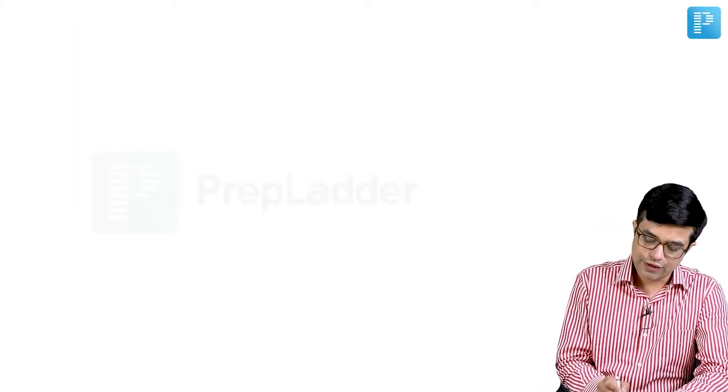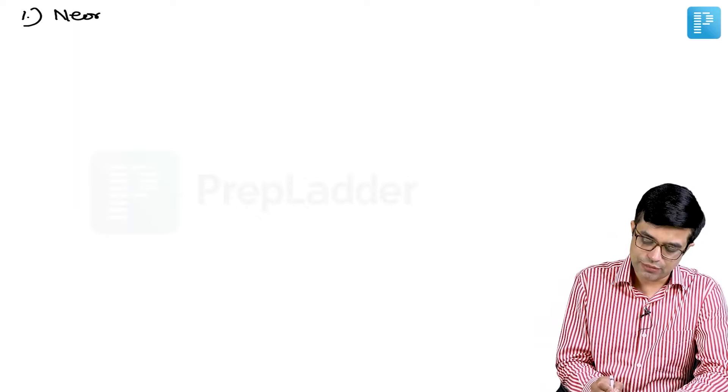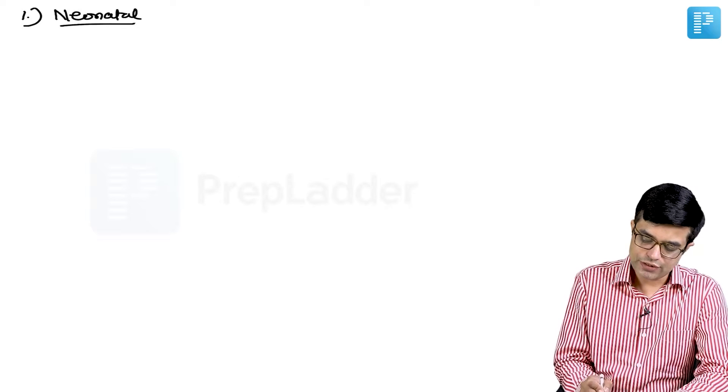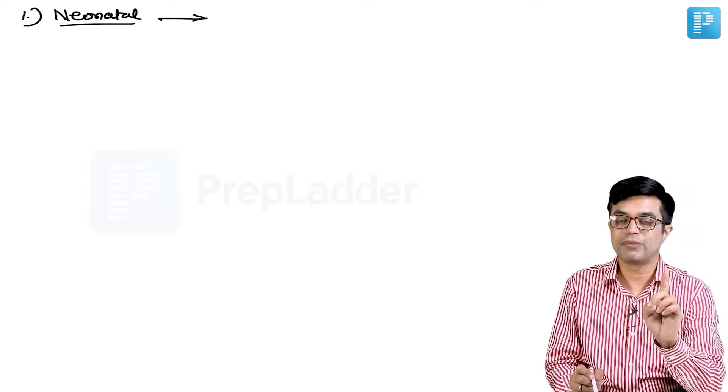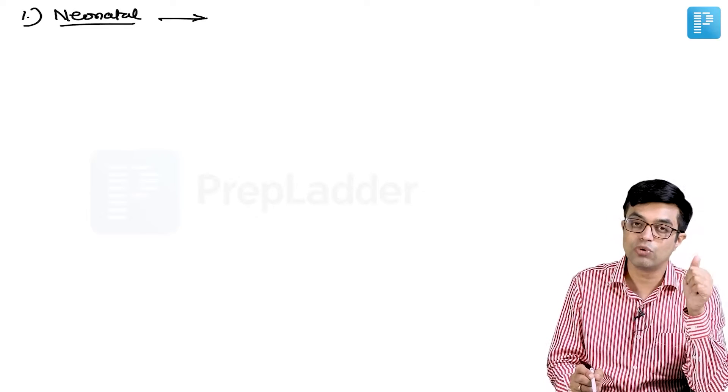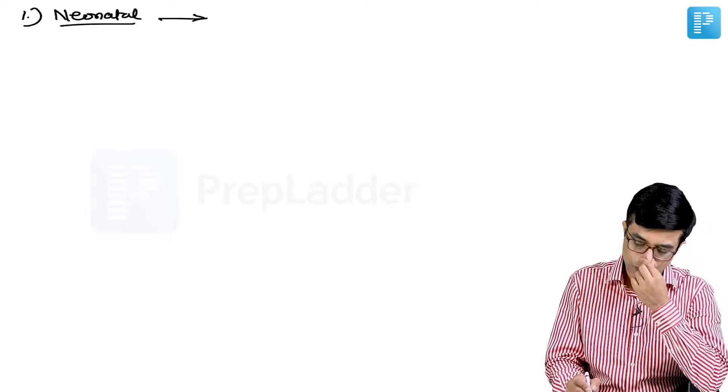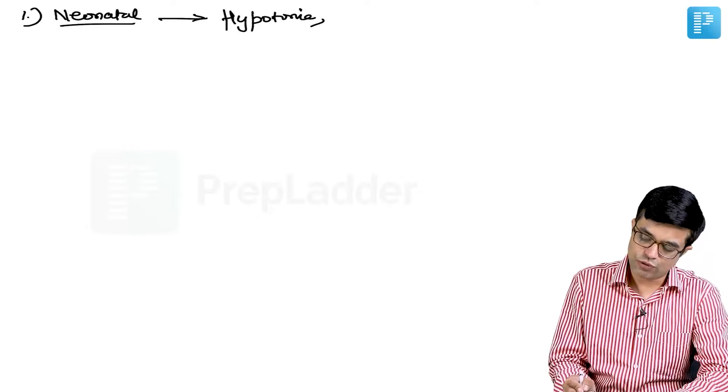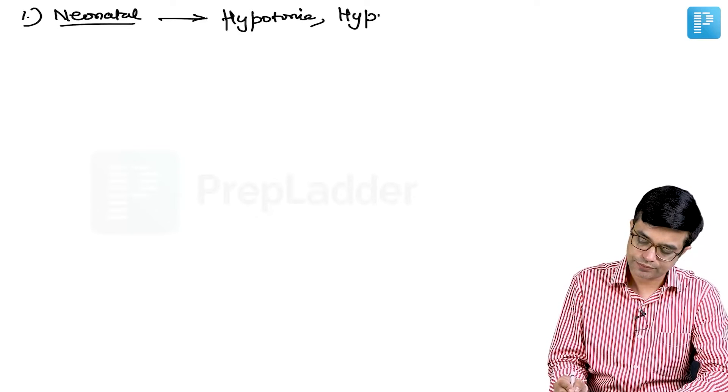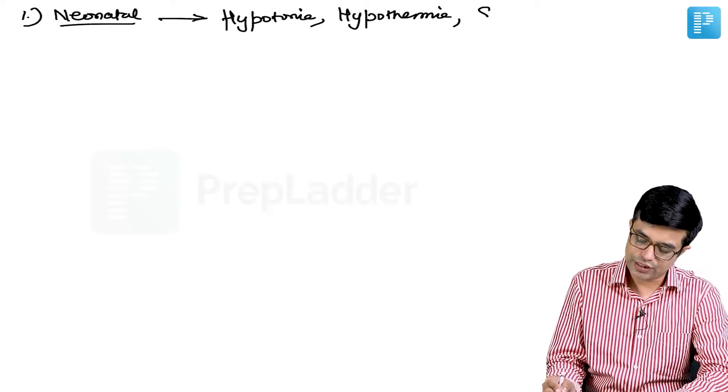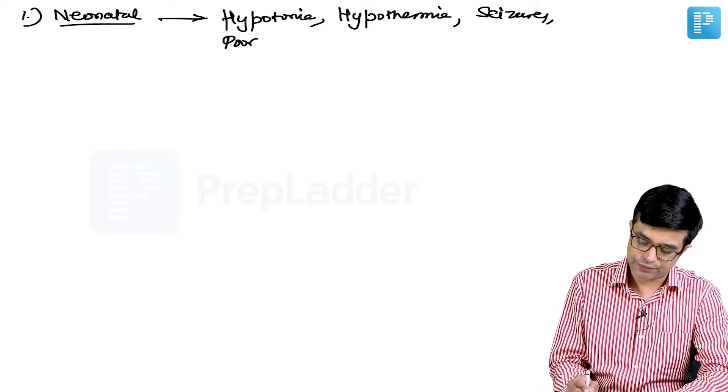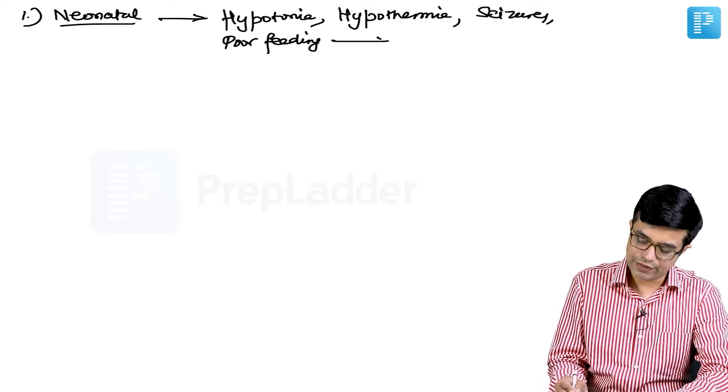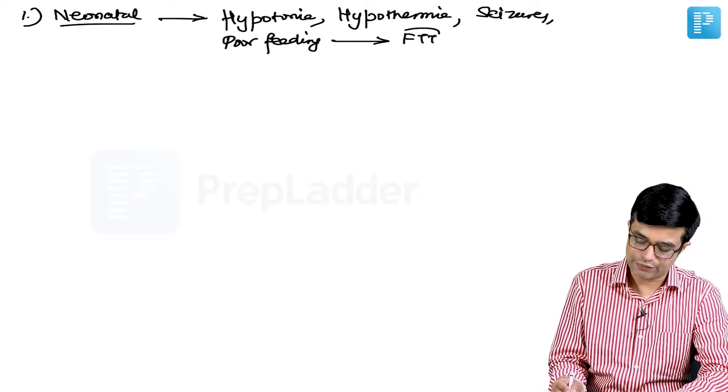Let us enumerate what abnormalities you find. First of all, if you look at the neonatal period, neonates will have CNS abnormalities. Remember that CNS abnormalities in neonatal period will appear before hair abnormalities come to attention. You will have hypotonia in the patient, newborns having hypothermia, chances of neonatal seizures, and poor feeding. Poor feeding will gradually lead to failure to thrive in these individuals.